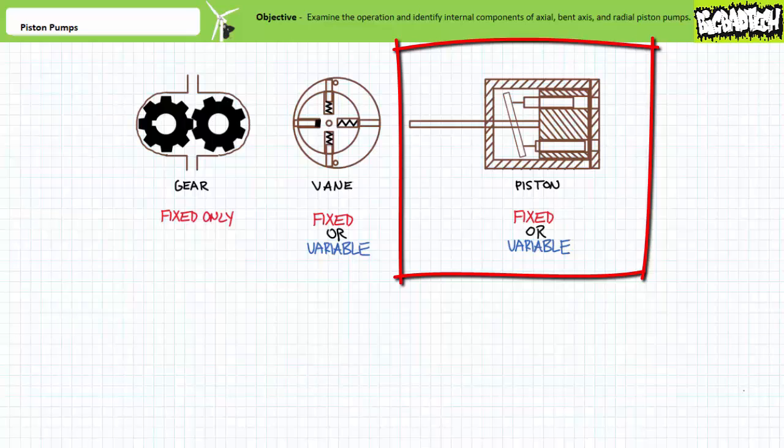A fixed displacement piston pump keeps the angle constant, whereas a variable displacement piston pump varies the angle to vary displacement per revolution. The intention of this lecture is to examine the internal construction and discuss the principles of operation of piston pumps only. Other lectures at the Big Bad Tech channel examine gear and vane pumps.